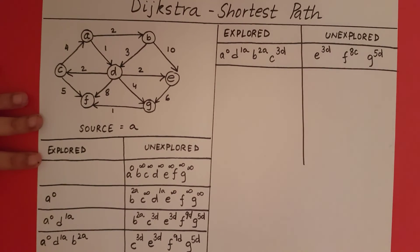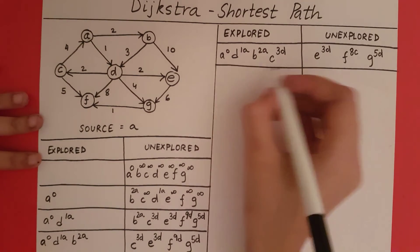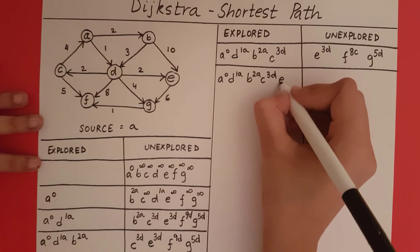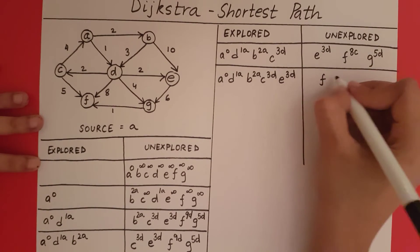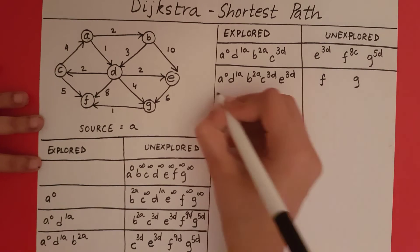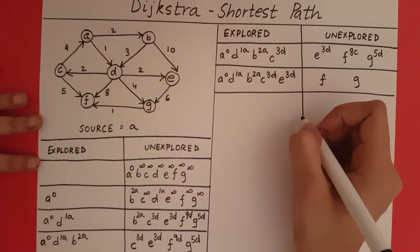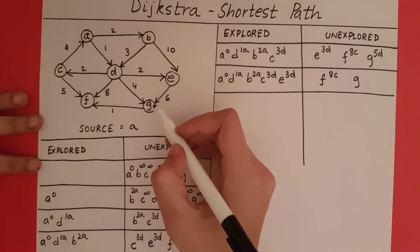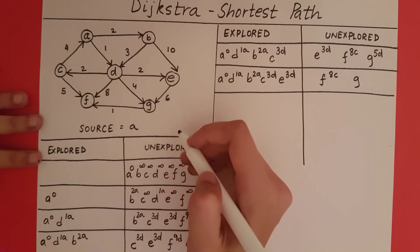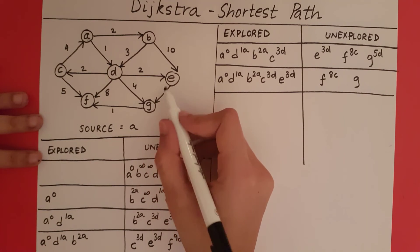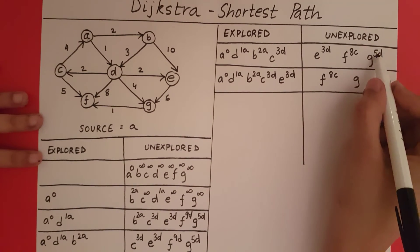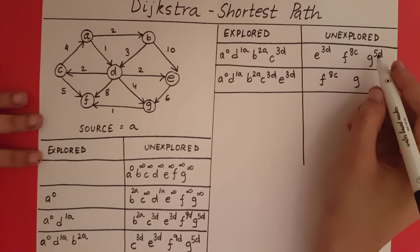Now we take the unexplored vertex with minimum distance and make it explored. The unexplored vertices are now F and G. We have just explored E. There is no direct edge between E and F, so we retain. There is a direct edge between E and G with weight 6, giving a potential distance of 6 plus 3 equals 9. Since 9 is not less than 5, we retain the distance of G as 5D.